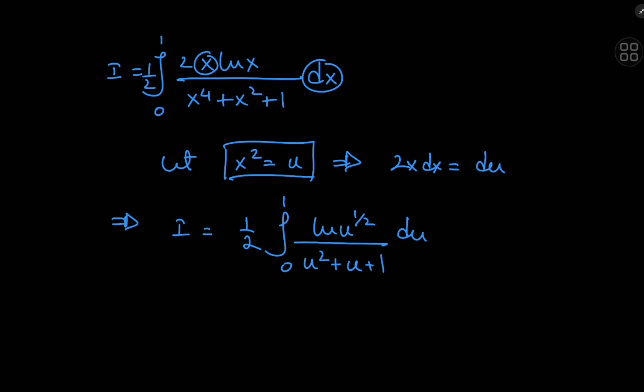Okay, cool. And of course this exponent can be written as a coefficient using the properties of the logarithm. So we have 1 half times 1 half. So all of this implies that i equals a quarter of the integral from 0 to 1 of log u du divided by u squared plus u plus 1.